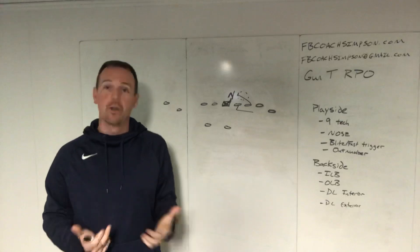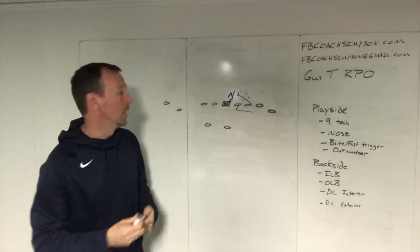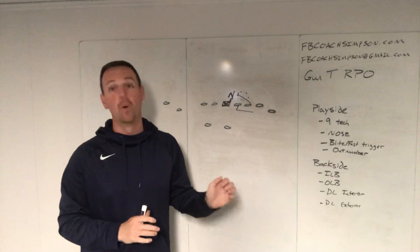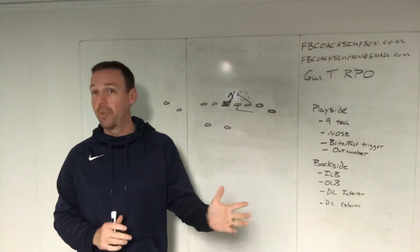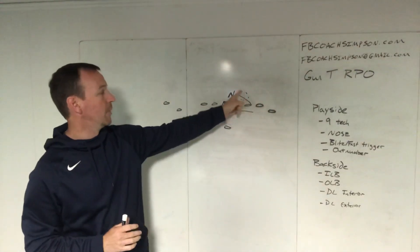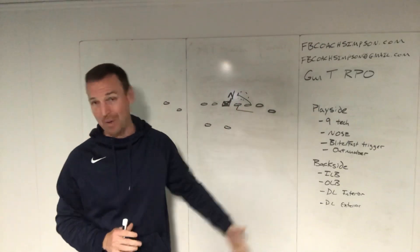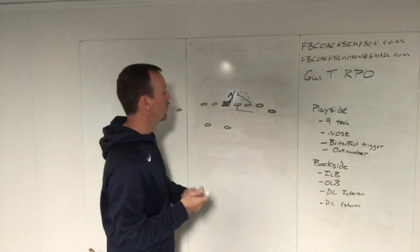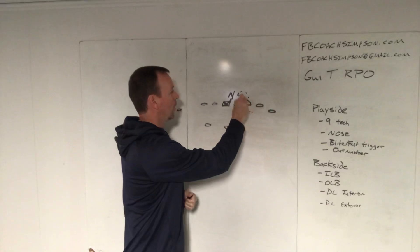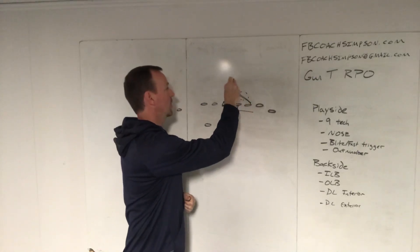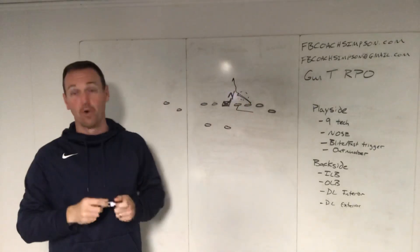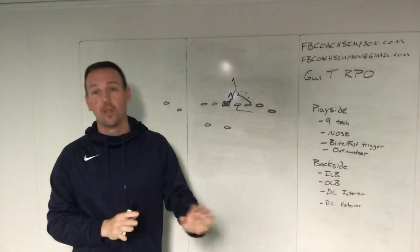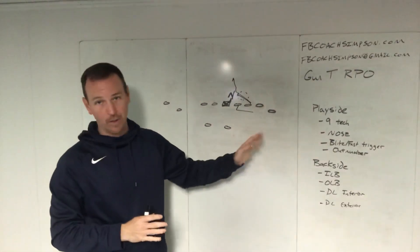If your strong tackle is good enough, he can go gap-down backer, give a little bit of help, and run through the deep hip — the back hip or the butt of that nose. So on his way to the backside linebacker, we're going to chip and work to the backside linebacker for our seal. Those are two ways you can handle a nose.